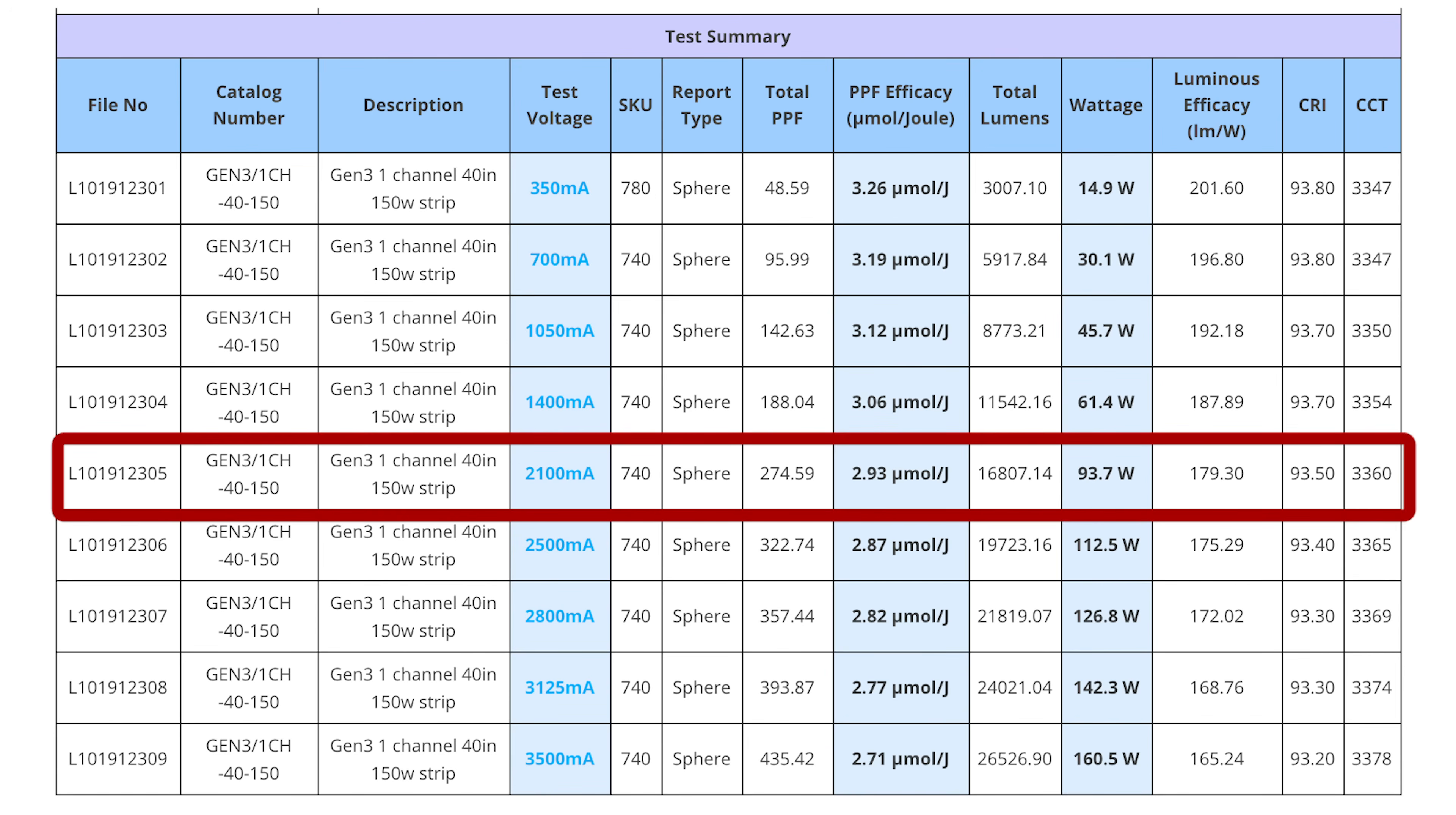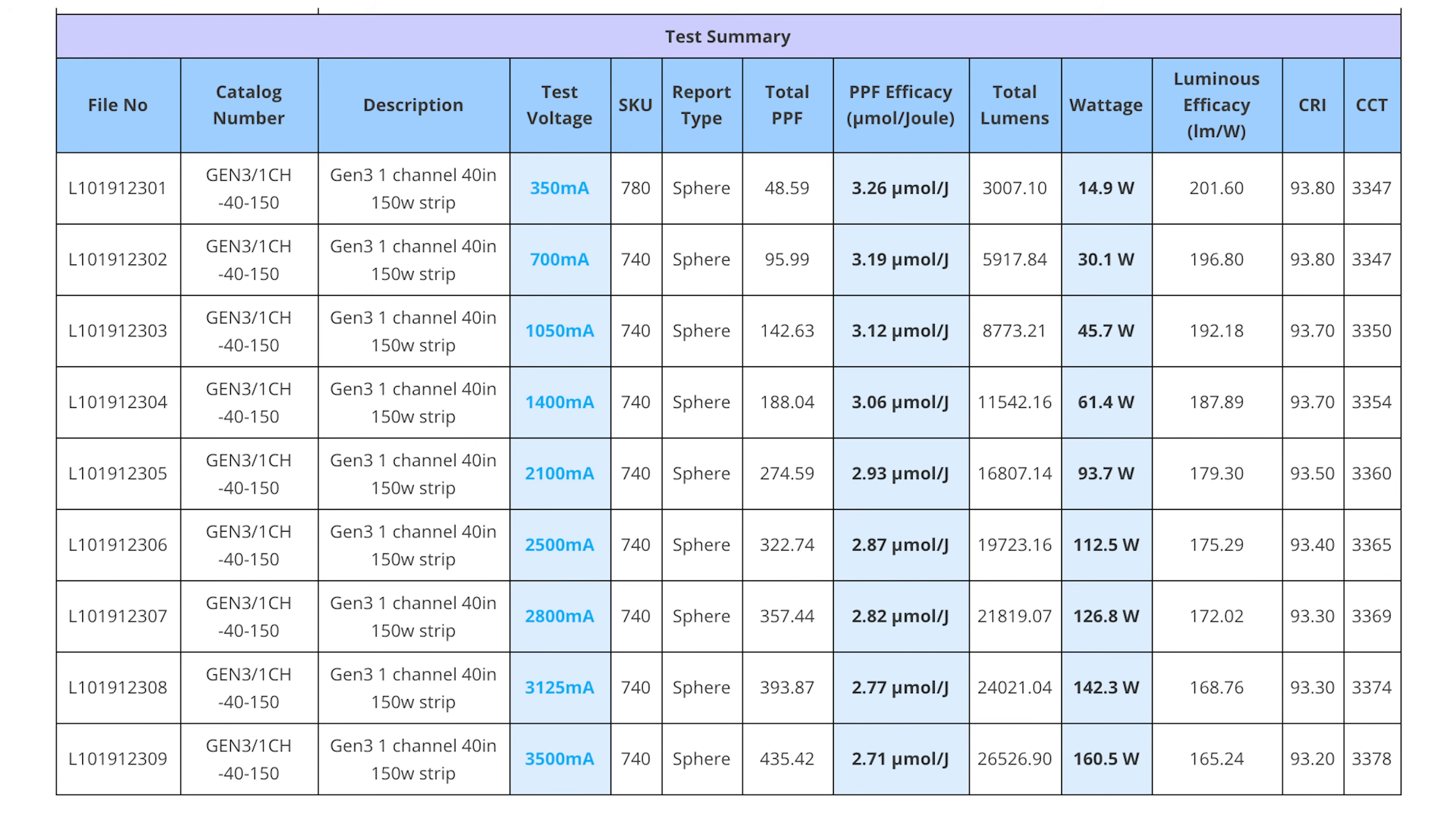Chill Tech reports the full system efficacy of the fixture at 3.13 micromoles per joule at the lowest wattage and 2.81 micromoles per joule at full wattage. 2.81 micromoles per joule is really really good, making this one of the most efficient grow lights on the market at this time.